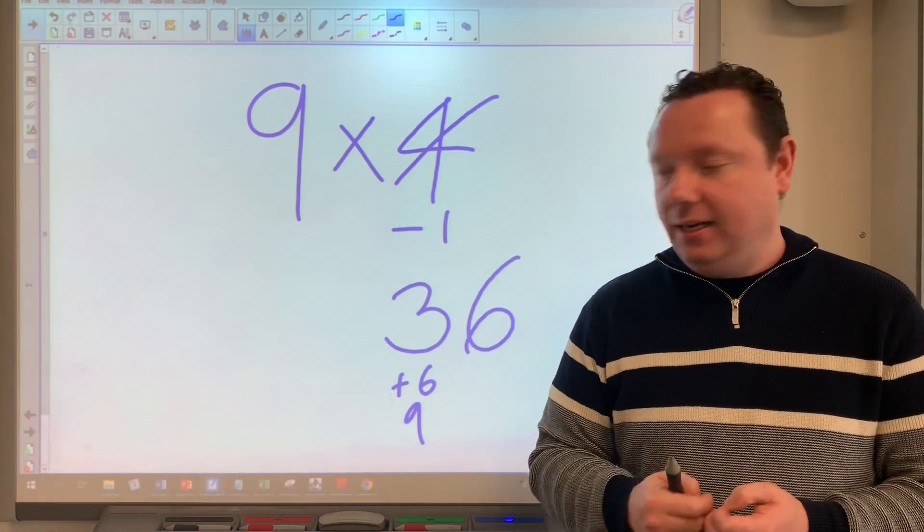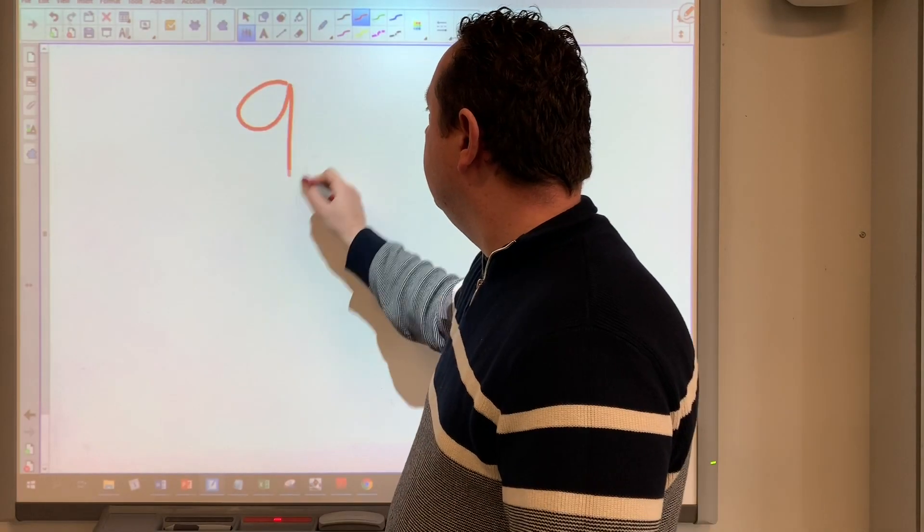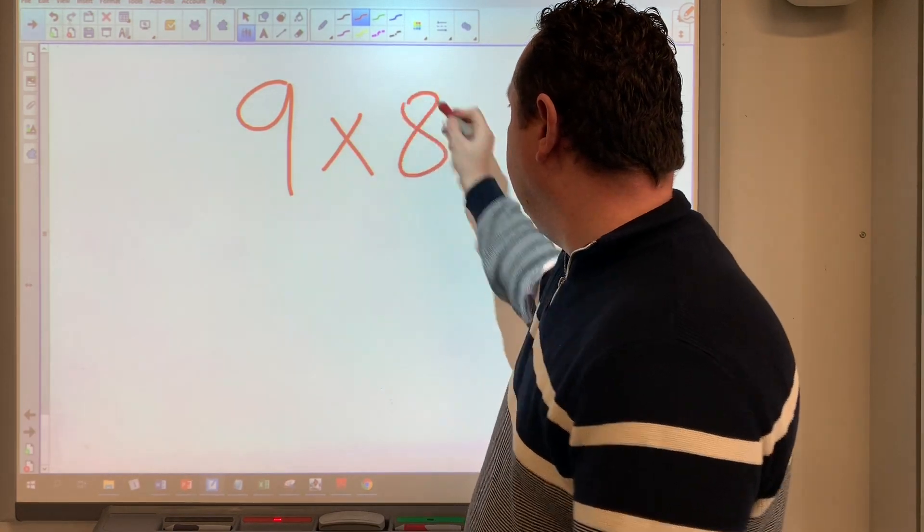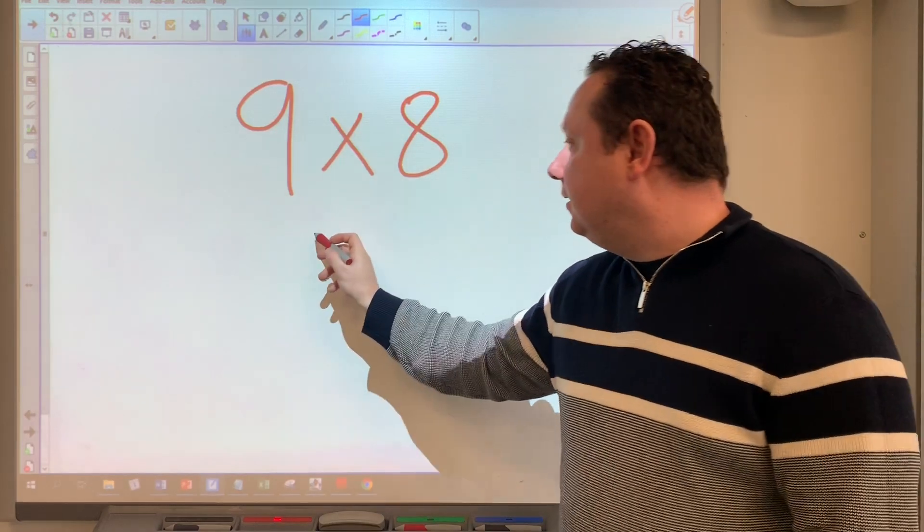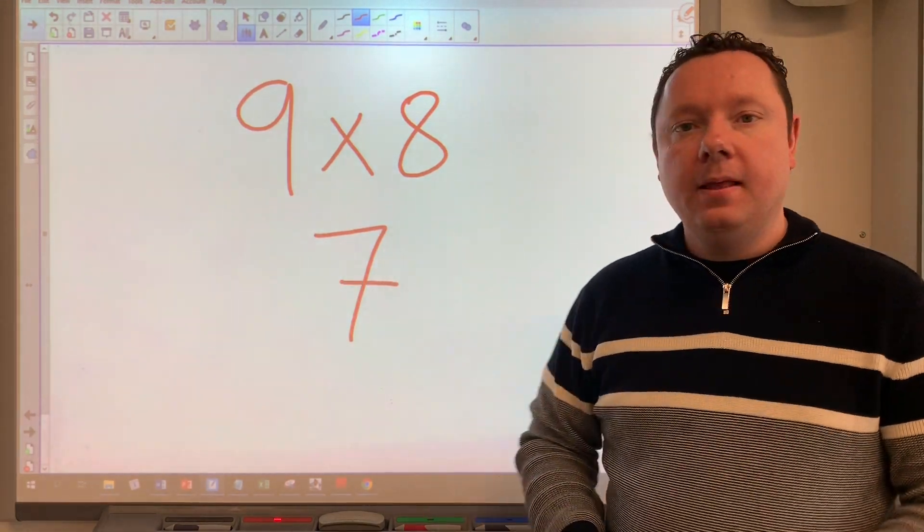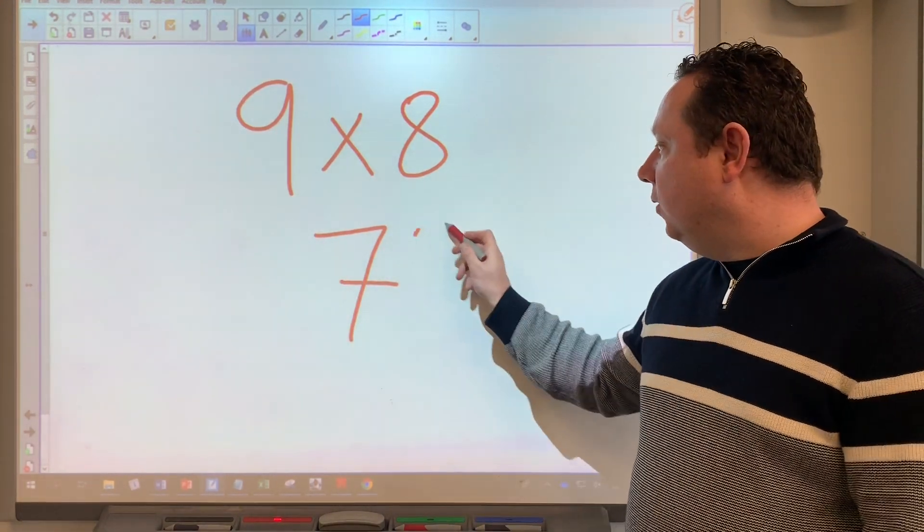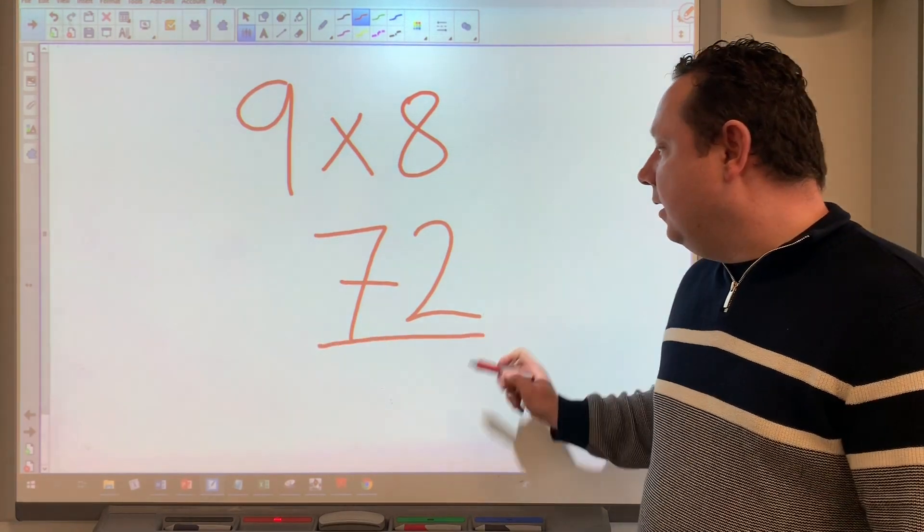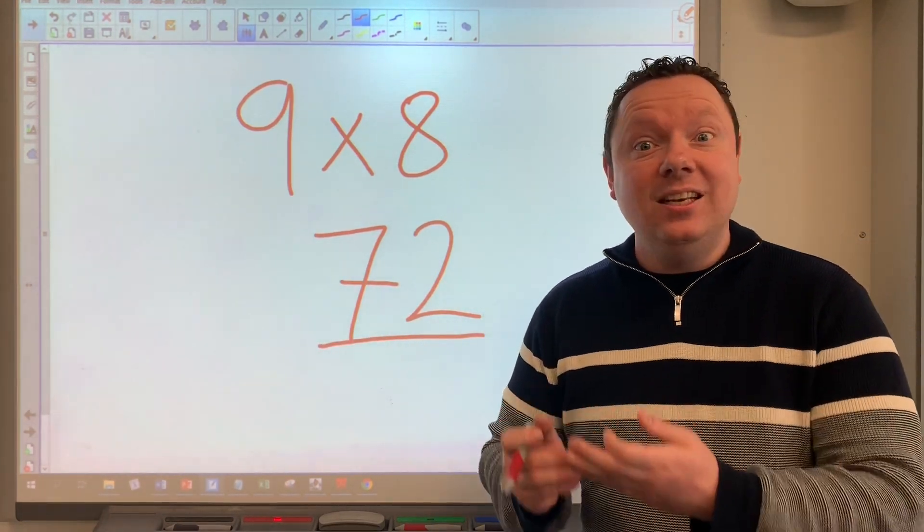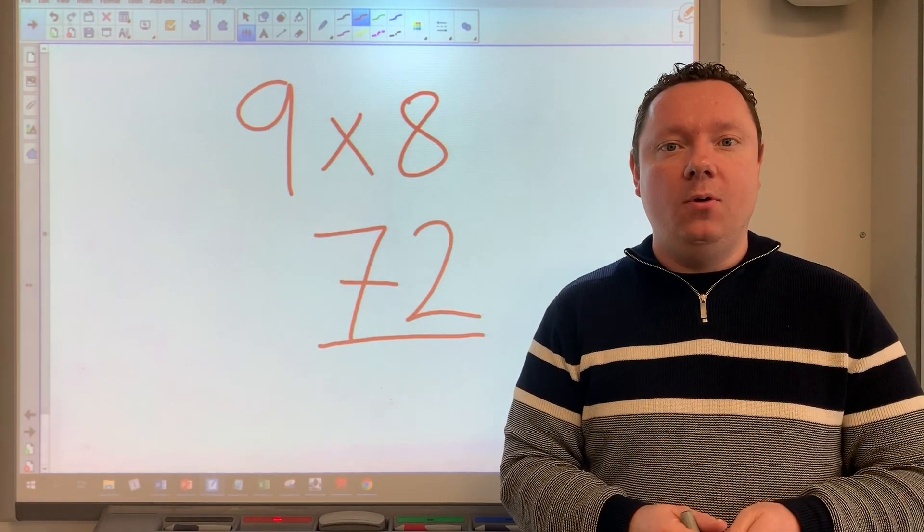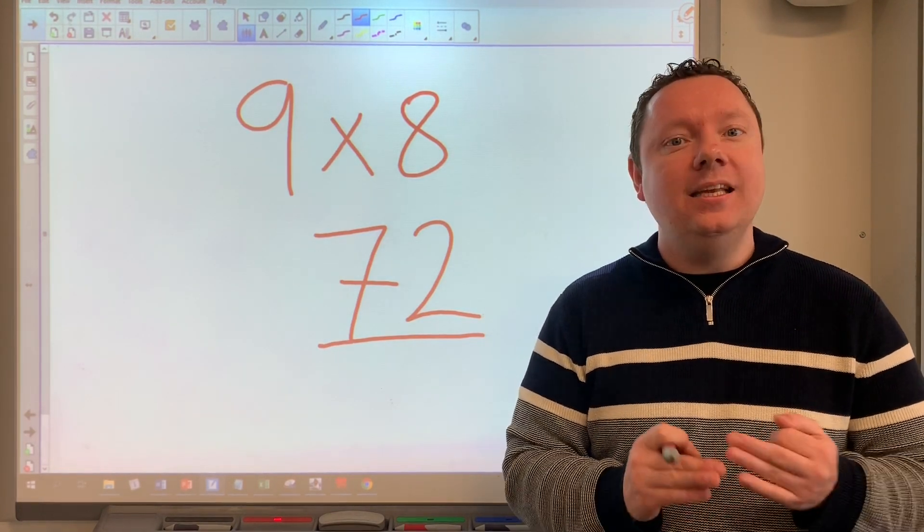9x8 - so using the same method again, eight take away one is seven. Seven and two make nine, so it's 72. No memorization. If you can take away one and then add to nine, you can do the nine times table. Very simple, very easy, very effective.